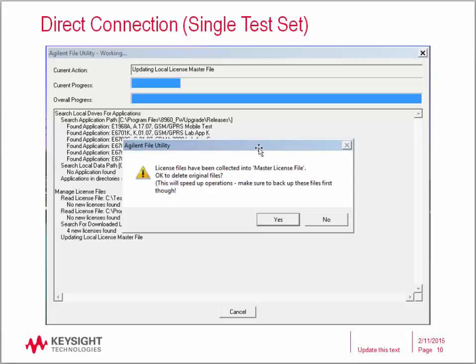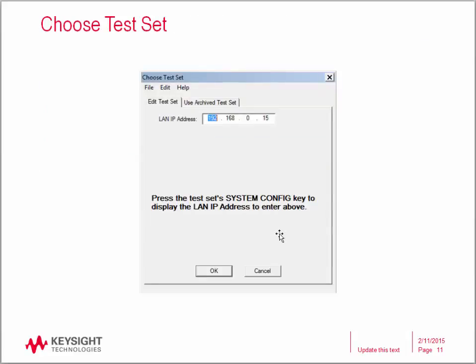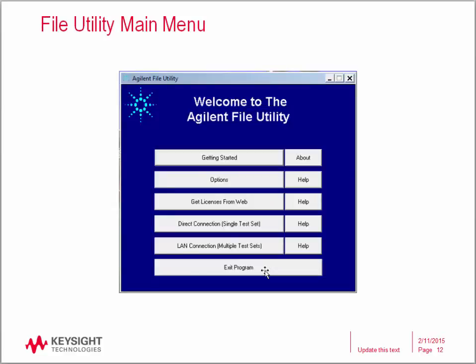Make sure you have saved your original license file and then click Yes. After clicking Yes, the software again displays the Choose Test Set screen. Since your license file has been successfully installed, nothing further needs to be done. Click the Cancel button to return to the file utility main menu.